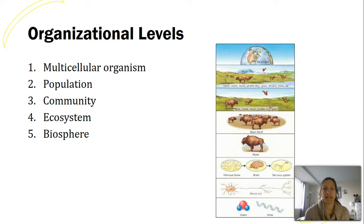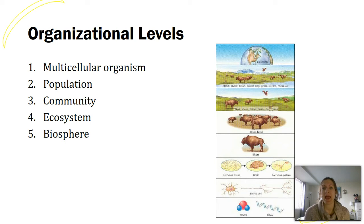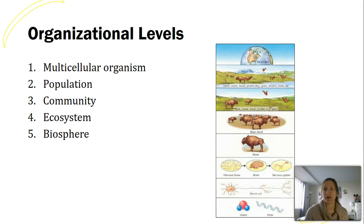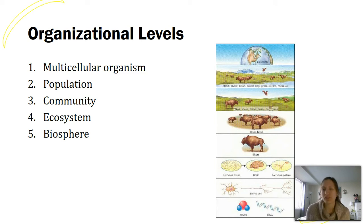Our final unit is the ecology unit. Ecology is essentially the study of organisms and their interactions with one another, as well as with the environment. This is really different from what we've been talking about — evolution and organisms on an individual level: plants, fungi, protists, animals. But now the last unit is tying that all together. How does this all fit into the world?